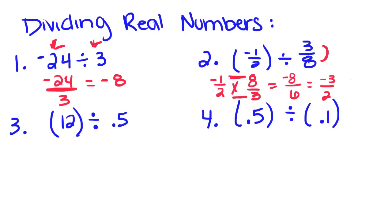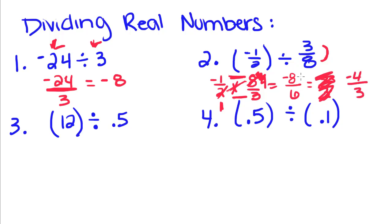There's also a useful trick: before you multiply, you can reduce diagonally. For example, 2 goes into 2 once and 2 goes into 8 four times. If you multiply across after reducing, you get negative 4/3. Excuse me — I made a mistake earlier: 2 goes into 8 four times, so the correct answer is negative 4/3.